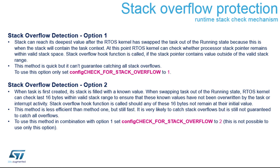If you see issues with method one, you can use method two. Method two takes more time during the task switch but examines the area at the bottom of the stack. There are four words filled with a known pattern, and this function reads and compares them to the expected pattern. If a stack overflow occurred, this pattern will be corrupted. If it's corrupted when read, you know the application most probably overflowed and returned, giving you stack overflow detection with much higher reliability.